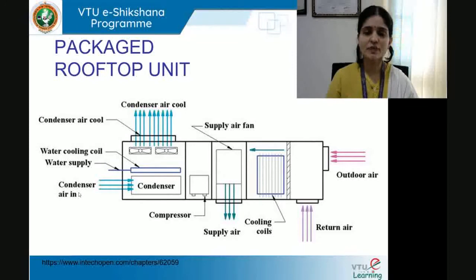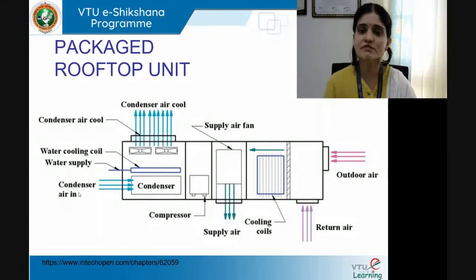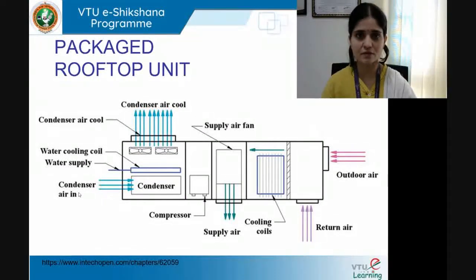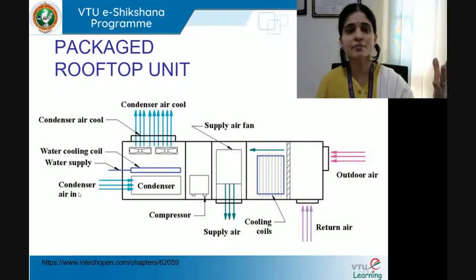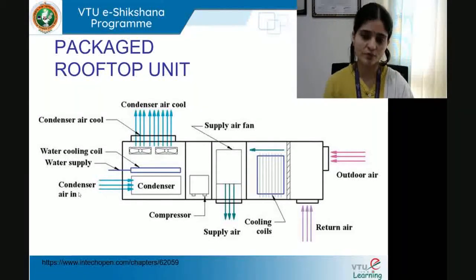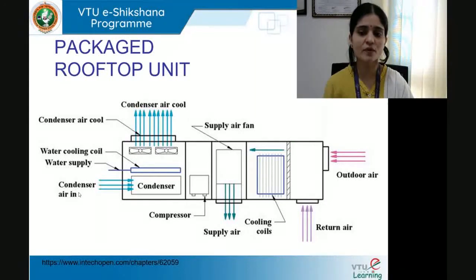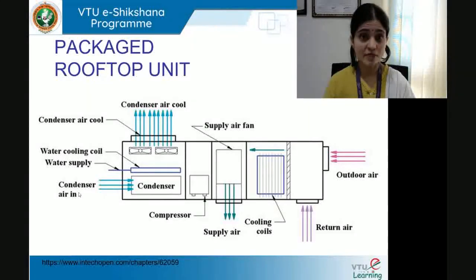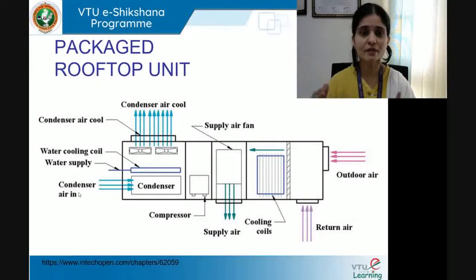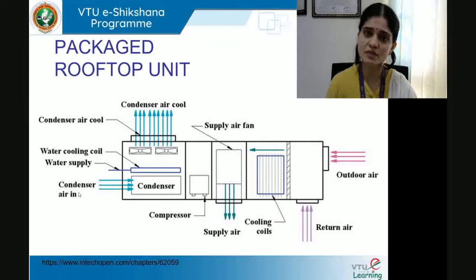All these components — evaporator coil, condenser, compressor, and fans — are embedded in a big package placed on the rooftop. On site there must be provision made for electrical wiring, the refrigerant piping, the influx of outdoor air, and ducts to get in the return air and supply back the conditioned air. All of that involves skilled labor on site.